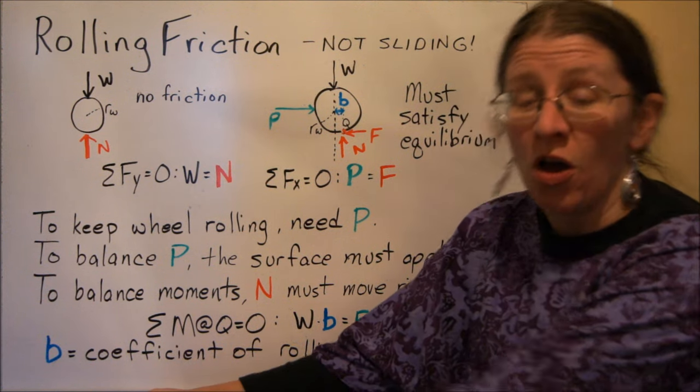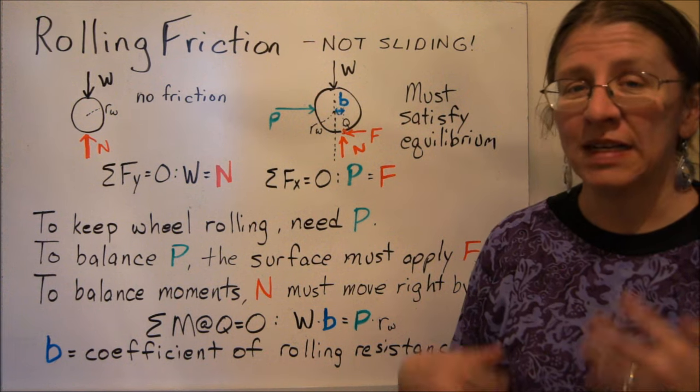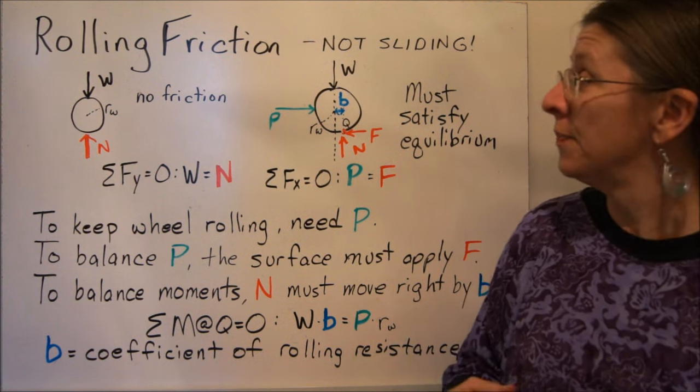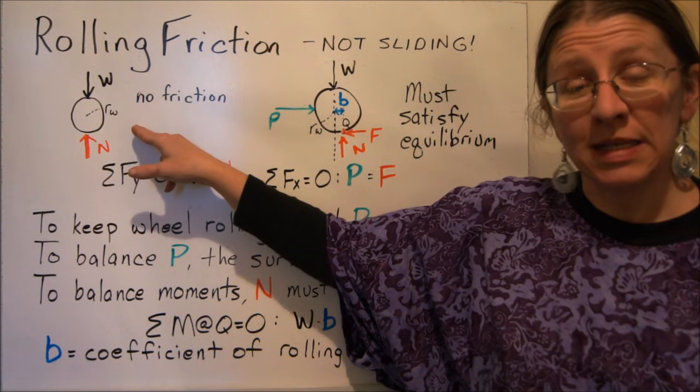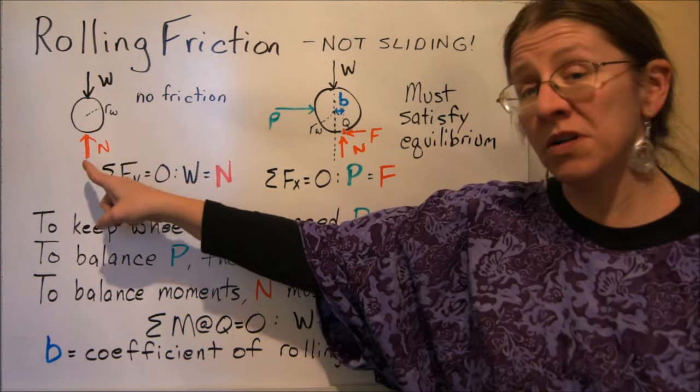You can have something sliding along or rolling along, but it's not going to be both. It's kind of like tipping, it's another choice. So if you have a wheel that's going like this and it's rolling along with no friction at all, there is no horizontal force here.